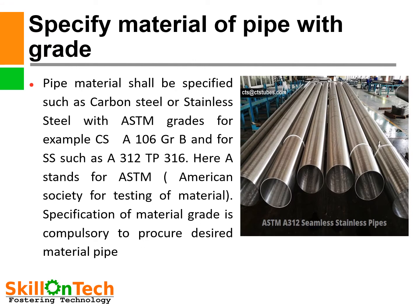Specify material of pipe with grade. Pipe material is very important; therefore, while procuring a pipe, we must specify the material. Pipe material shall be specified with ASTM grades — for example, carbon steel A106 Grade B, and for stainless steel, A312 TP316. There are various grades available in the market, so we should specify the correct grade. Here, 'A' stands for ASTM — American Society for Testing of Materials. Specification of material grade is compulsory to procure the desired pipe. A SS pipe showing ASTM A312 seamless stainless steel pipe is shown in the picture.